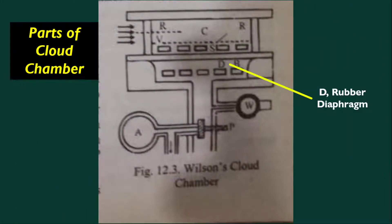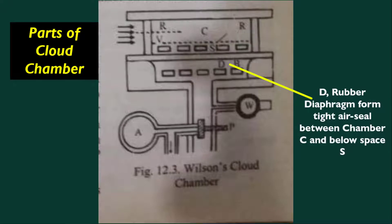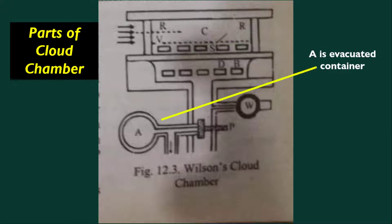The rubber diaphragm D forms an airtight seal between the chamber C and space S. A is an evacuated container, kept closed by its piston P.